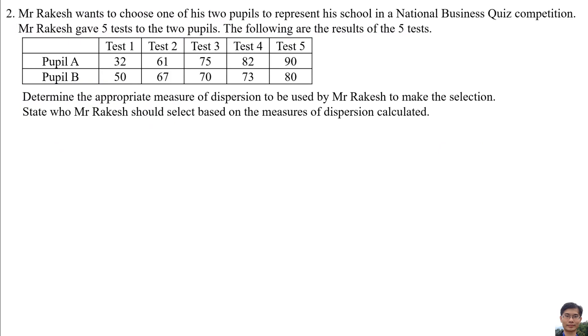Number 2: Mr. Rakesh wants to choose one of his two pupils to represent his school in a National Business Quiz competition. Mr. Rakesh gave 5 tests to the two pupils. The following are the results of the 5 tests. Determine the appropriate measure of dispersion to be used by Mr. Rakesh to make the selection. State who Mr. Rakesh should select based on the measures of dispersion calculated.